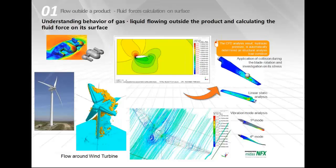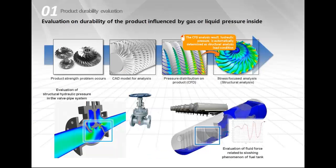Understanding the behavior of gas or liquid flowing outside a product is also important - for example, flow around a wind turbine, to know if the flow will deform it at certain pressures. CFD can also evaluate the durability of a product influenced by gas or liquid pressure inside, such as checking pressure in a valve to avoid breakage, corrosion, or evaluating fluid forces on walls due to sloshing.